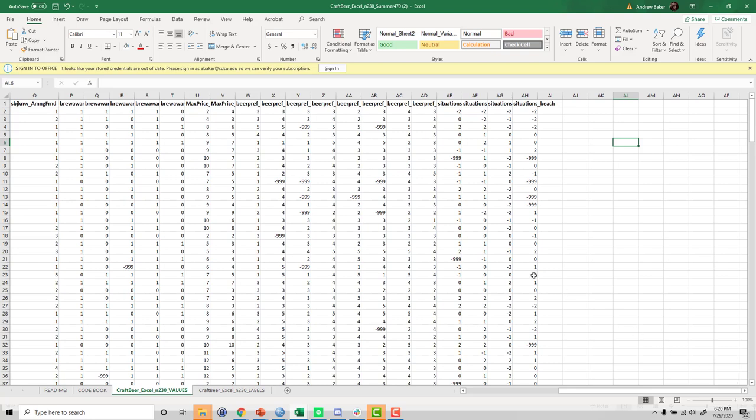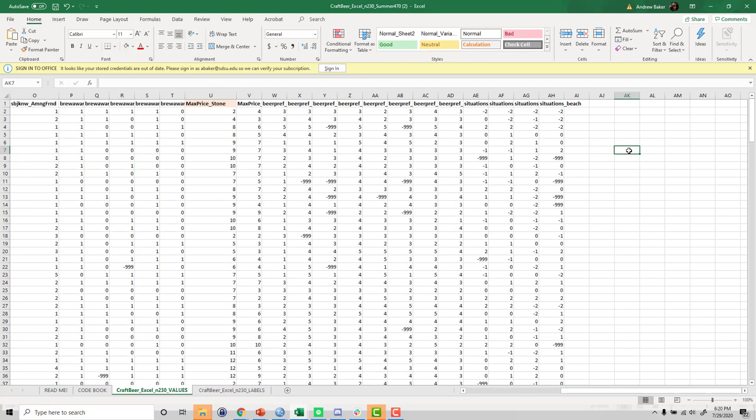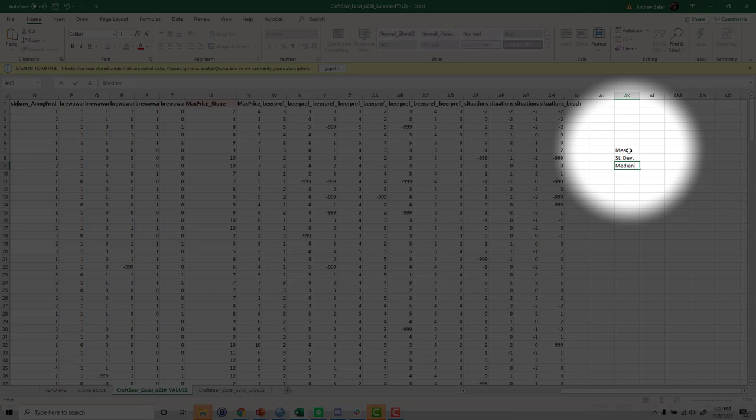Okay, so in this example, we want to use the max price stone variable here. It's in column U for me. And based on our tutorial, our goal is to report the following summary statistics, and I'm just going to start making the table elsewhere: the mean, the standard deviation, the median, and the 80th percentile.